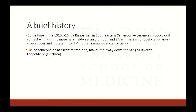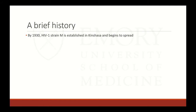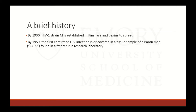He or somebody he transmitted it to made their way down the Songha River to Leopoldville. From 1920 to 1935, there was a French campaign to vaccinate against sleeping sickness in this area, vaccinating between 60,000 and 600,000 people a year — with no sterile technique. At one point they used six syringes to vaccinate 90,000 people. By 1930, HIV-1 strain M had established itself in Kinshasa and began to spread. In 1959, we have our first confirmed HIV infection, discovered in a tissue sample of a Bantu man named ZA59, found in a research laboratory freezer — actually by one of our researchers here at Emory.